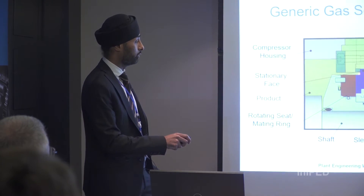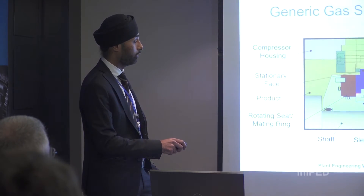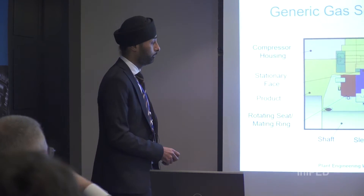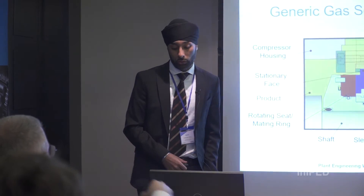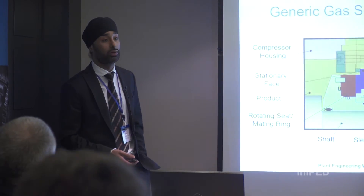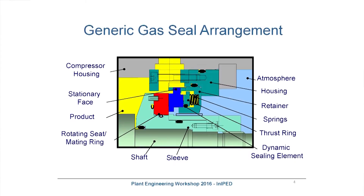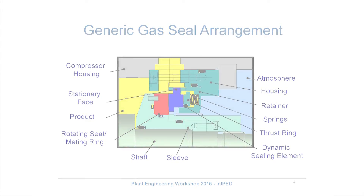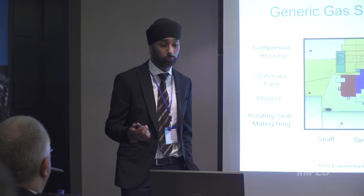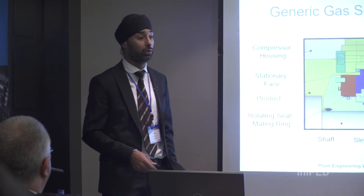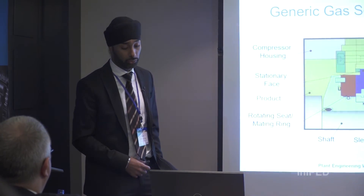The gas seal sees the highest pressure on the process gas side and normally sees ambient pressure on the other side. In the 1970s, a survey revealed that the most common cause of compressor system failures was oil system faults, because prior to gas seals we used mechanical seals in compressor systems. Gas seals are now installed by all major OEMs — GE, Siemens, Dresser — everyone uses gas seals.